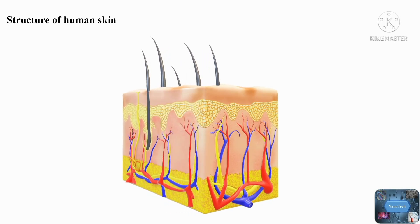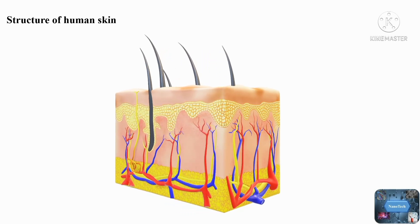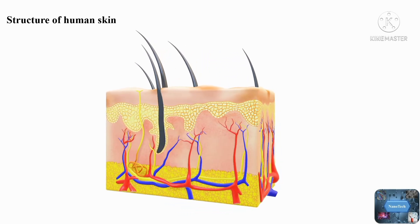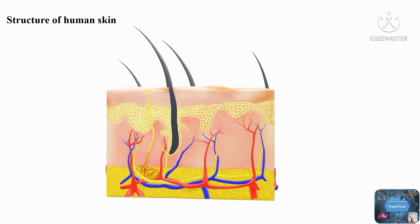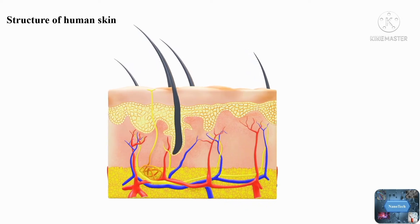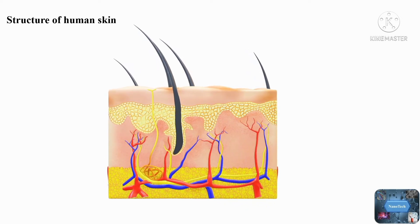Hair follicles, sweat glands, sebaceous glands, apocrine glands, and lymphatic and blood vessels are all found in the dermis. It is made up of connective tissue and serves as a cushion for the body against external stress and strain.